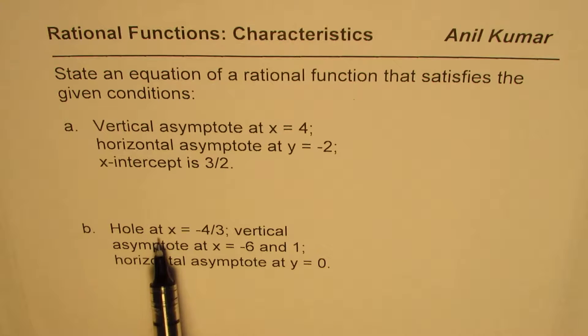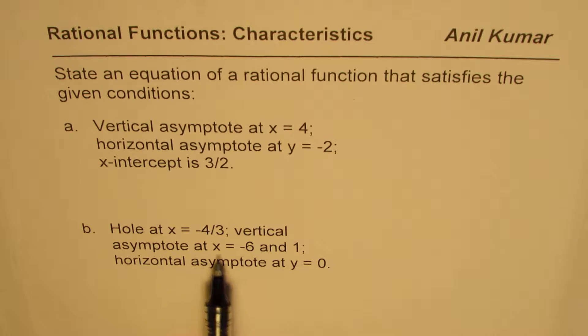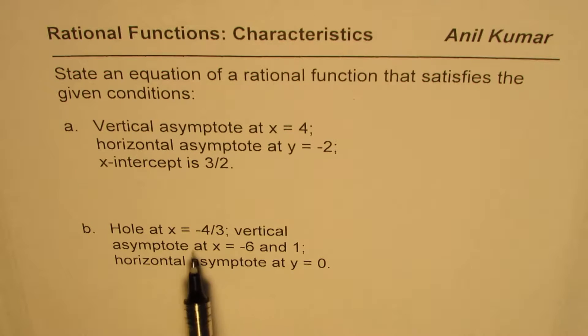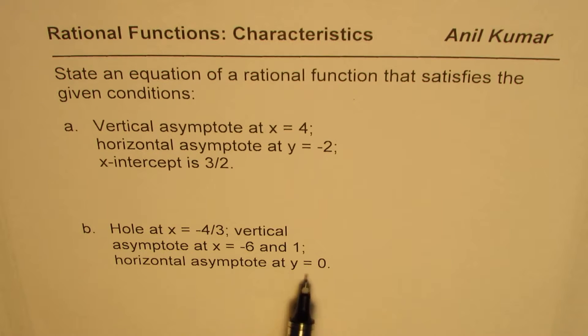The second one is: hole at x equals minus 4 over 3, vertical asymptote at x equals minus 6 and 1 — so there are two vertical asymptotes — and horizontal asymptote at y equals 0.